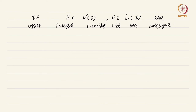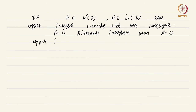Moreover, we already know that if f is Riemann integrable, then it is upper integrable — that is what we proved in the last video — and both integrals coincide. So ultimately, this shows the Riemann integral coincides with the upper integral, which in turn coincides with the Lebesgue integral.